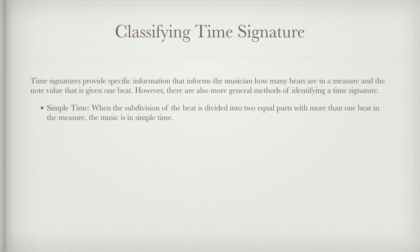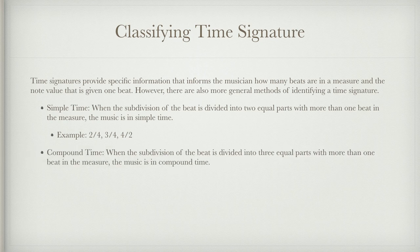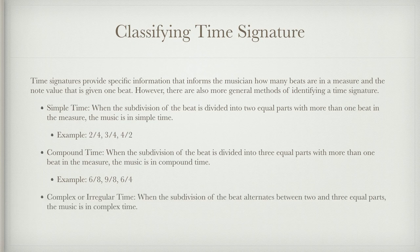A 1/4 time signature would not be simple time. Typical examples of simple time are 2/4, 3/4, and 4/2. With compound time, the subdivision of the beat is divided into three equal parts with more than one beat in the measure. Examples include 6/8, 9/8, and 6/4. Compound time tends to have a triple feel while simple time has a duple feel. Anything not fitting simple or compound time we call complex or irregular time.